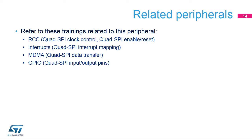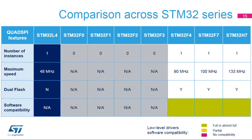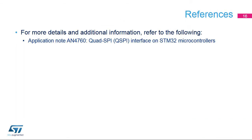You can refer to the training slides related to the RCC, interrupts, MDMA, and GPIOs for additional information. The Quad SPI is also implemented in some STM32F4 and STM32L4 devices. However, the STM32F4, STM32F7, and STM32H7 offer dual flash support and higher I/O speeds. For more details, please refer to the following documentation available on our website.